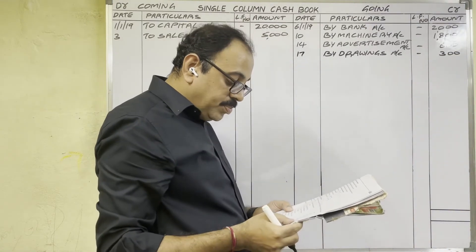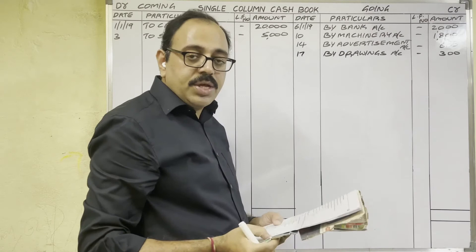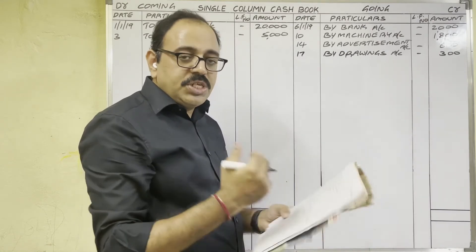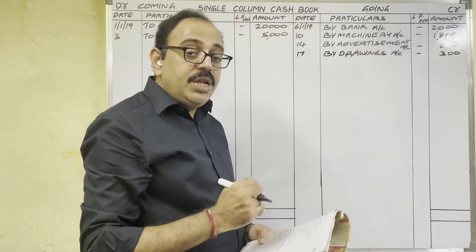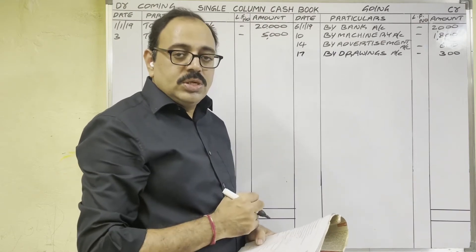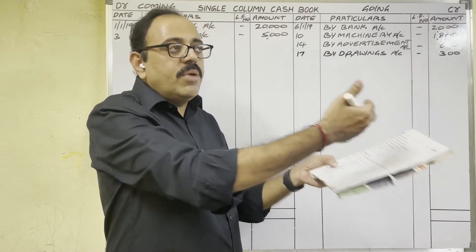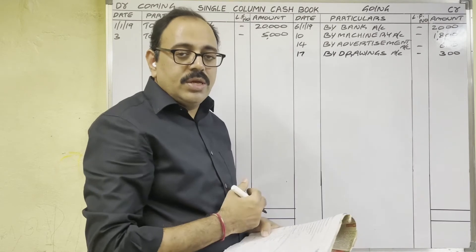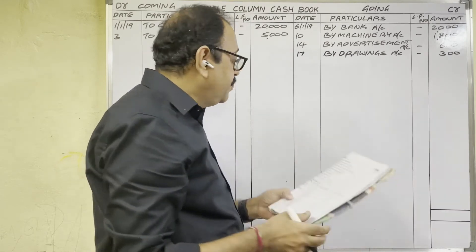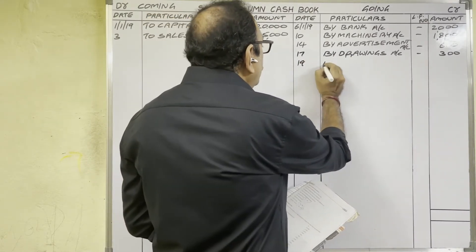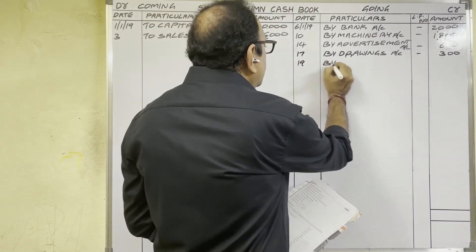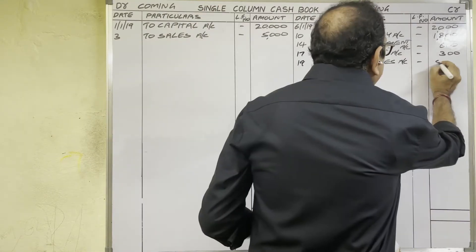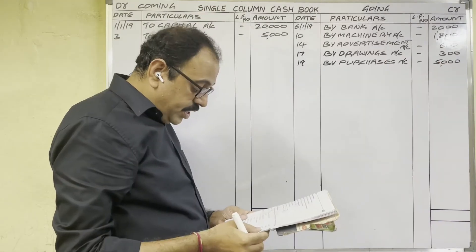19th January: cash purchases 5,000 rupees. No information about what is bought, so the meaning is we are buying goods. Goods are coming to the firm and cash is going from the firm — credit side. On 19th date, when goods are purchased write: 'By Purchases Account', 5,000 rupees.